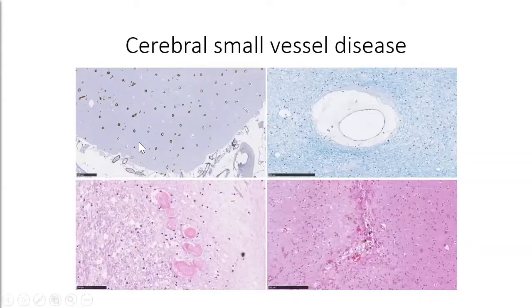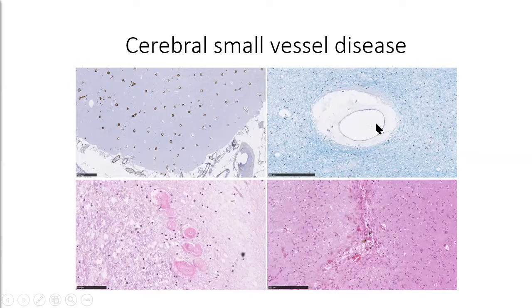The scale bars are a bit small, but the span of the cortex is about two millimeters, while the individual vessels are about 50 to 100 micrometers. So they're very, very small.